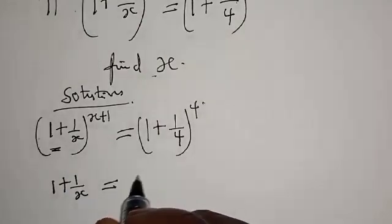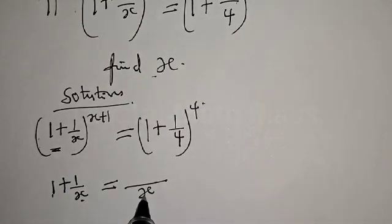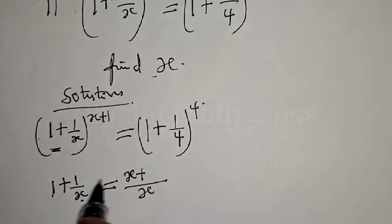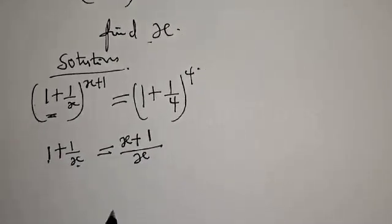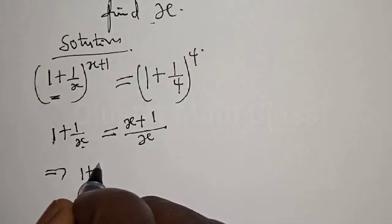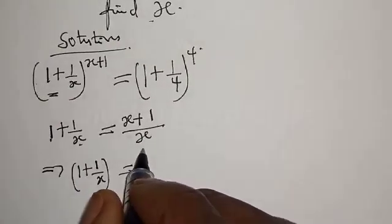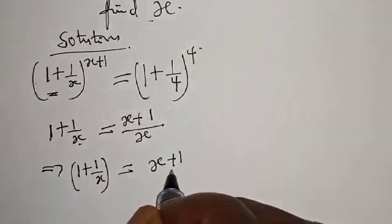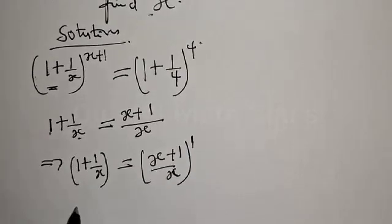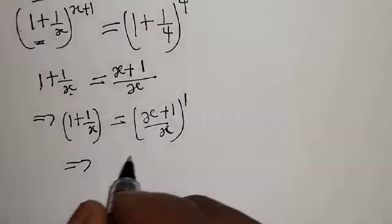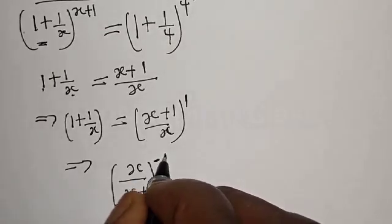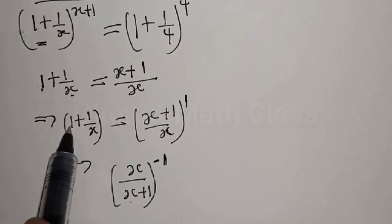1 plus 1 over x can be expressed with a common denominator. The denominator is x, and 1 times x is x, so we get x plus 1 over x. This means 1 plus 1 over x equals x plus 1 over x, raised to the power 1. Taking the reciprocal, this implies we have x over x plus 1, raised to the power minus 1.